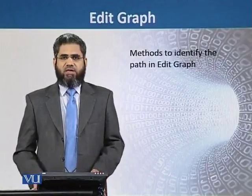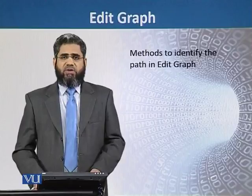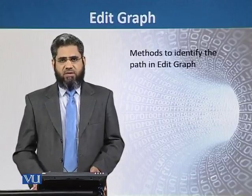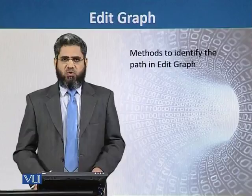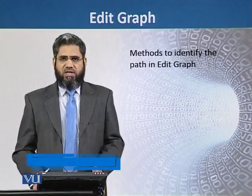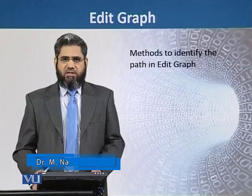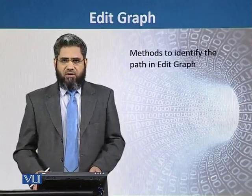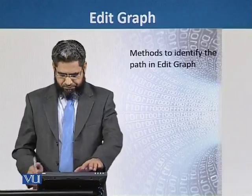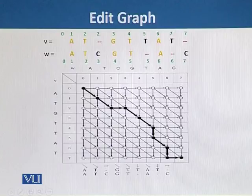We have seen different methods to calculate the path of alignment in an added grid. For creating the added grid, we should have two strings, namely V and W. We then align them in the form of a matrix and assign scores to the characters of these strings. We follow the path of the grid by assigning numbers to each vertex, and by assigning these numbers, we reach the end of the path of the added grid.